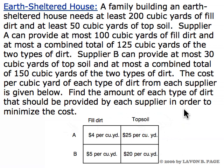The question is to find the amount of each type of dirt that should be provided by each supplier in order to minimize the cost. So what we have to do is given all the information about supply, we have to determine how much fill dirt should be obtained from supplier A, how much topsoil from supplier A, how much fill dirt from supplier B, and how much topsoil from supplier B. So that's four different quantities we need to specify in order to specify an optimal strategy. So this is a four variable problem.